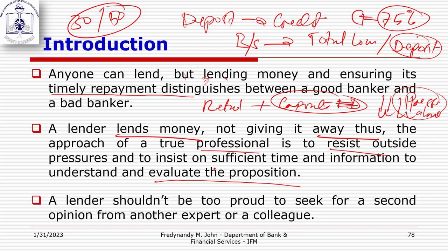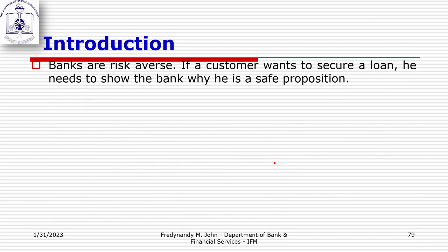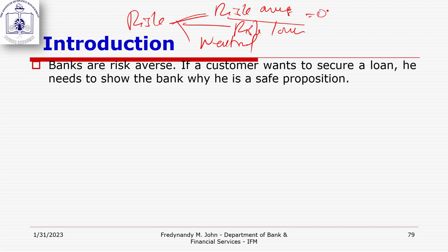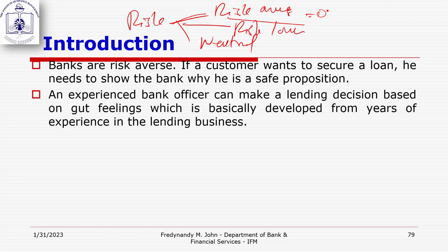Don't be too proud to ask for a second opinion if you are confused. Banks are risk averse — extremely cautious before making any kind of investment. A customer wanting to secure a loan needs to prove that the bank's funds will be safe. An experienced banker can make a lending decision based on intuition built over years of experience, but if you've just joined the department, don't rely on intuition alone.